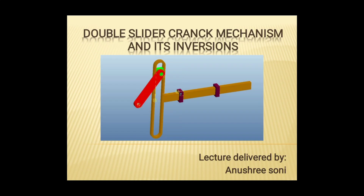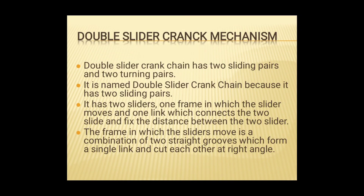Double slider crank mechanism is a modification of single slider crank mechanism. In single slider there was only 1 slider, so now we have done double slider — 2 sliders. This mechanism needs one link to be fixed, and it has two sliders and a crank. The crank is the element that rotates 360 degrees.